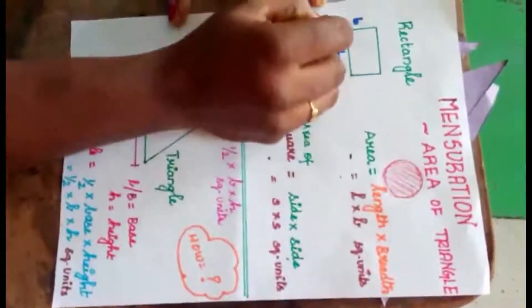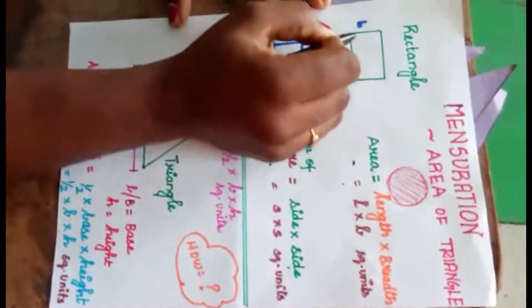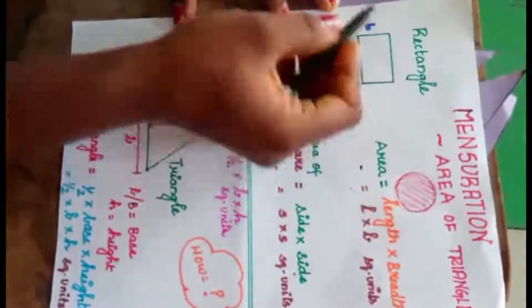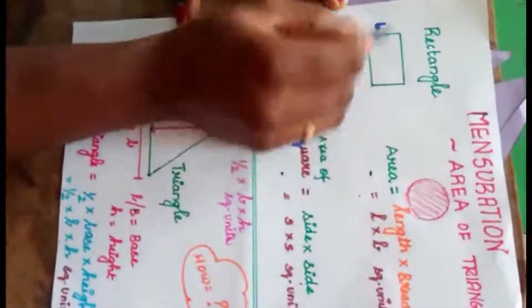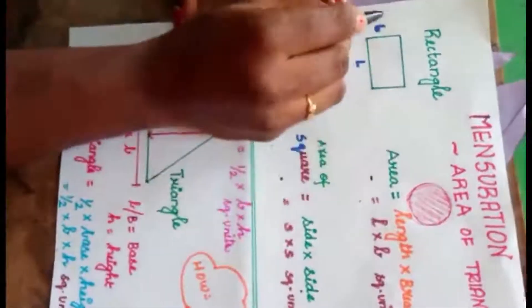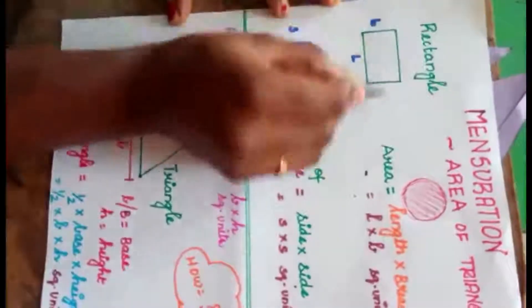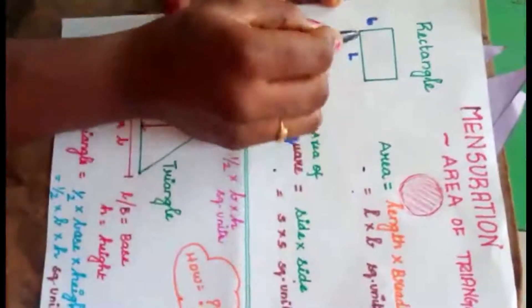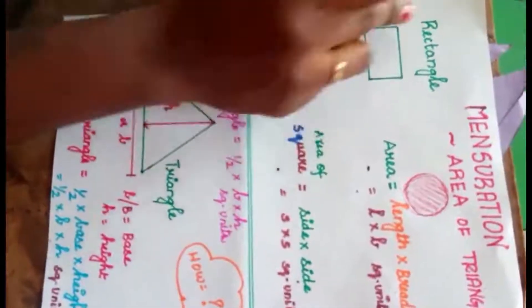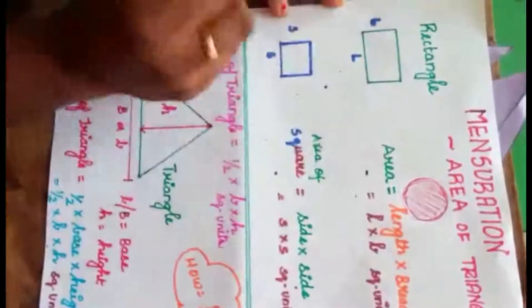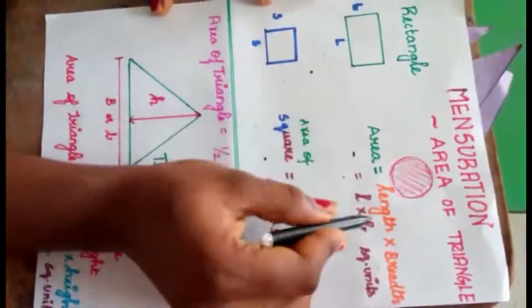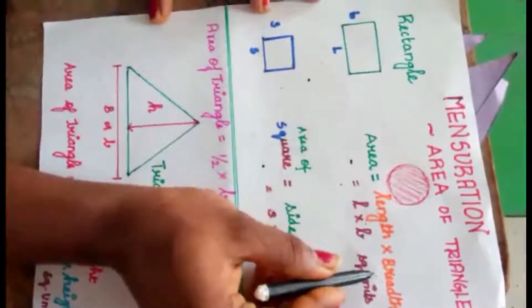Area of rectangle: a rectangle has four sides, and opposite sides of a rectangle are equal. Here we have length and breadth in case of a rectangle. Area of rectangle is equal to length into breadth.